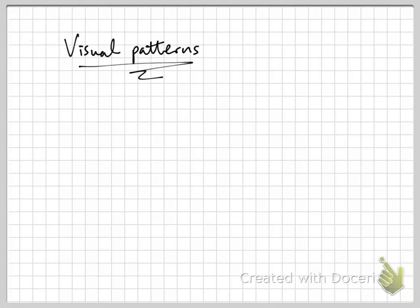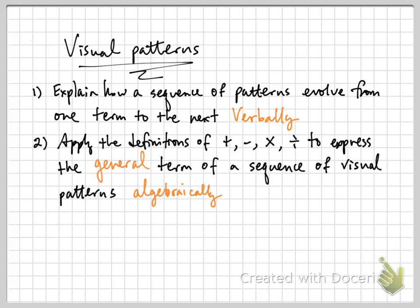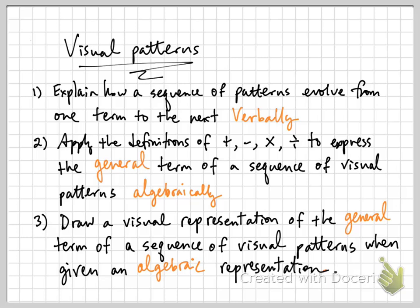Hi, this is Professor Jianmei Chen at California State University, Long Beach. In this video lesson today, we'll look at the concept of visual patterns. In particular, we'll explain how a sequence of visual patterns evolved from one term to the next verbally. We'll also apply the definitions of the four arithmetic operations to express the general term of a sequence of visual patterns algebraically. Lastly, we'll look at how to draw a visual representation of the general term when given an algebraic representation.